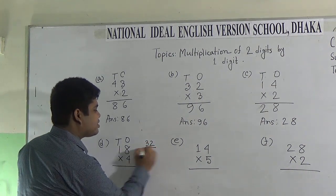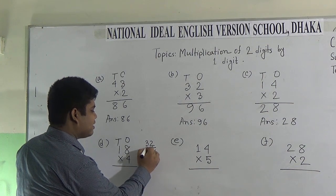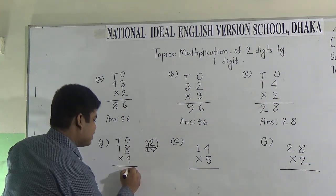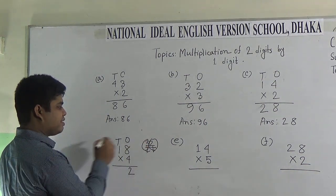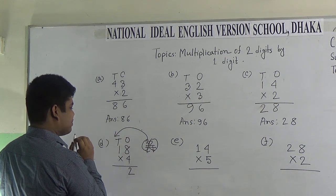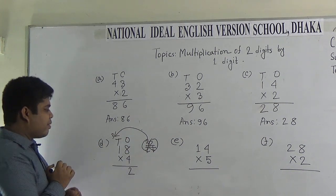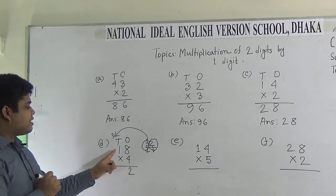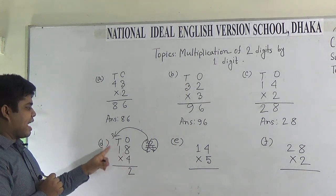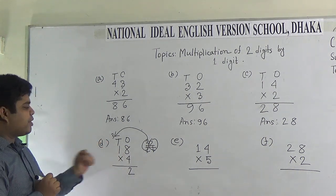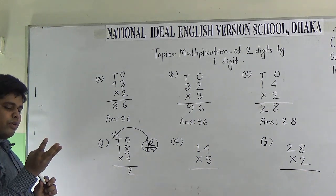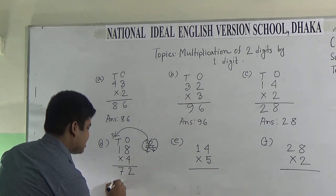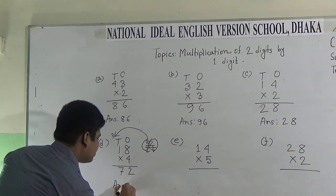32 has 2 places: 1's place and 10's place. So, the digit in the 1's place, which is 2, is placed in the 1's place. And 3 is carried to the 10's place. Now, we multiply 1 by 4. We count the times table of 4: 4 1's are 4. And carrying 3 is added with this 4. If we add 3 with 4, we get 7. So, 7 is placed in the 10's place. 72 is the answer.